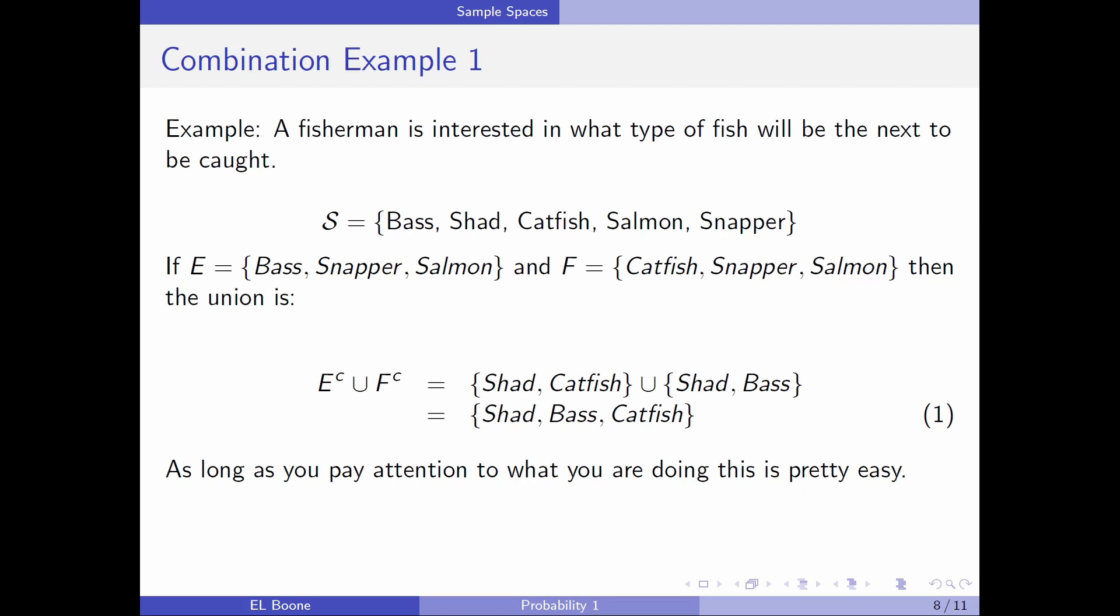Now, let's suppose we take some of these ideas and throw them together. Same setup as before. Bass, snapper, salmon. Catfish, snapper, salmon. Then the union here, let's look at the union of the complements. So we can chain these ideas together. So what's the complement of E? Well, it's everything that's in S that's not in E. Well, I looked at shad's not in there and catfish is not in E. So that's what I have there. Then I'm going to union that. Well, let's see what's in F.